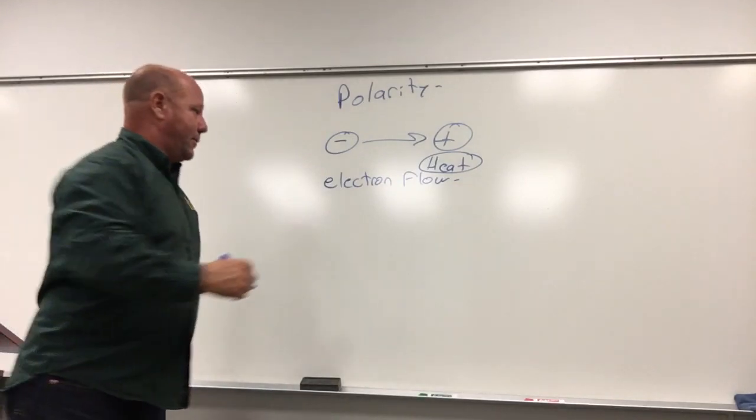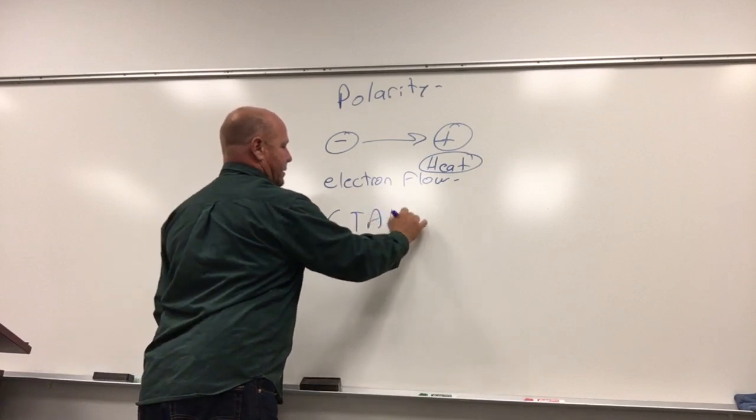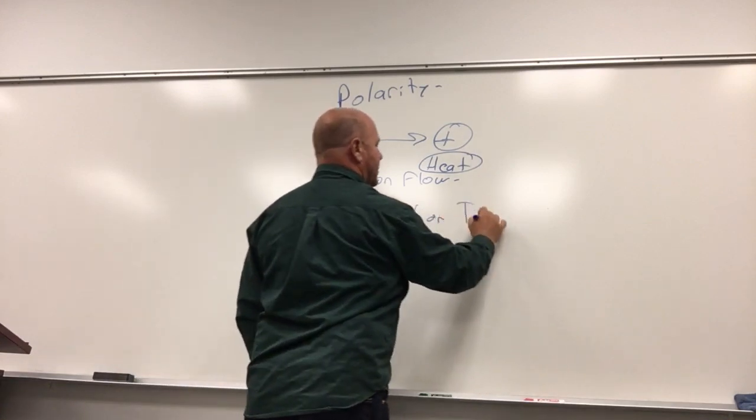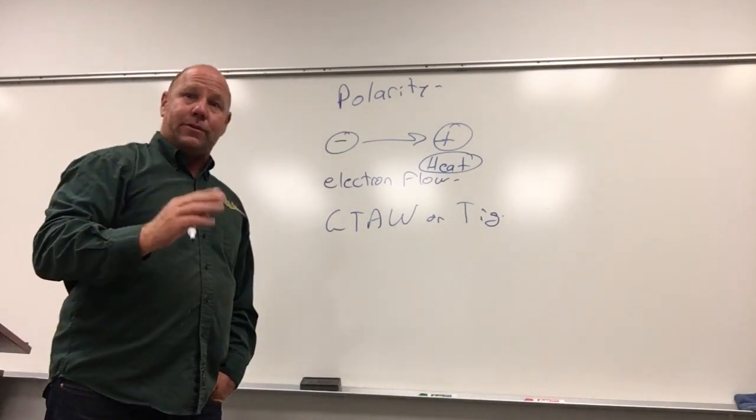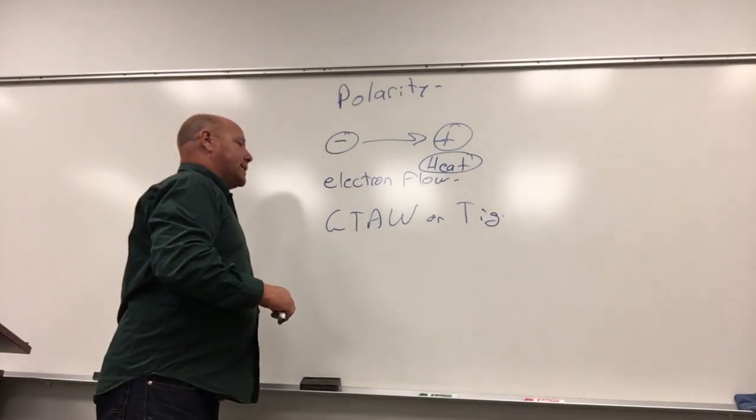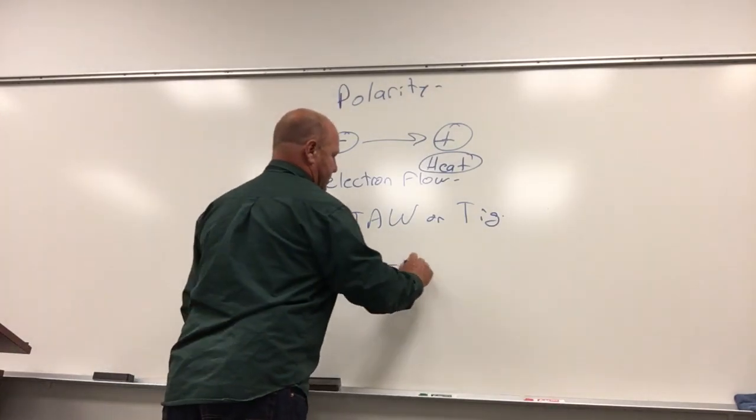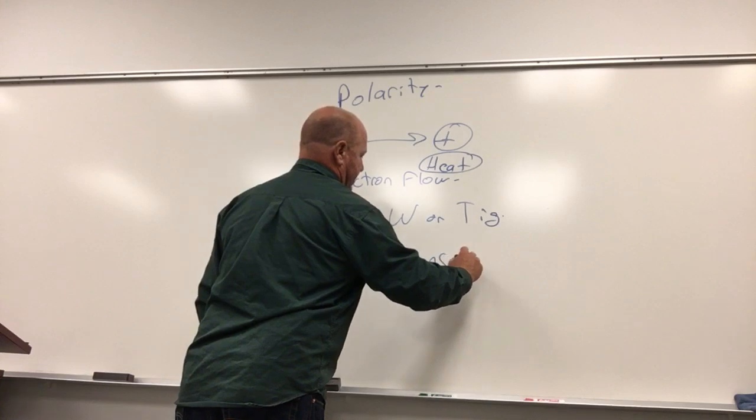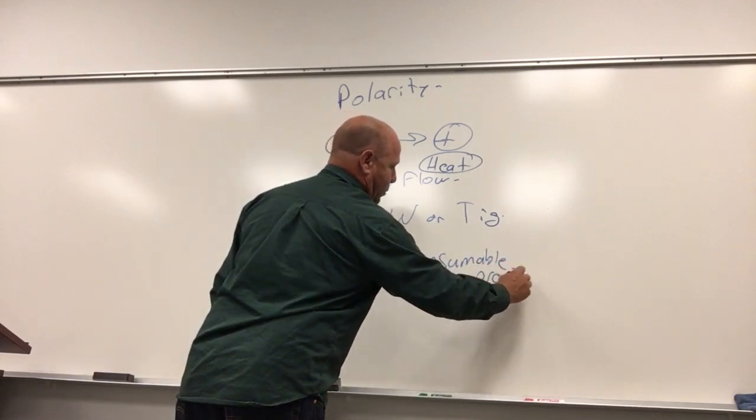Let's look at what we started with so far. Gas tungsten arc welding, or TIG. TIG welding is what we've been doing the first couple weeks, the first two weeks of steel. This week we've been doing aluminum. TIG welding is a non-consumable process. That's really important to know. Make sure you take a little time to note that.